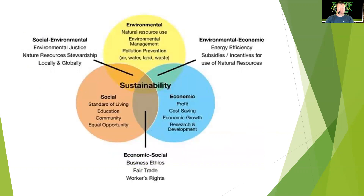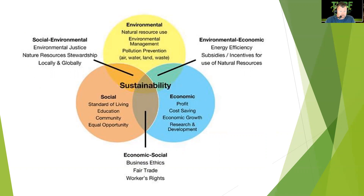Sustainability — the definition — it's social, economic, and environmental. With environmental: natural resource use, environmental management, and pollution prevention of air, water, land, and waste. Social is standard of living, education, community, and equal opportunity. Can everybody benefit from it? And of course, everybody benefits from us being sustainable.